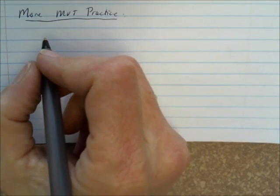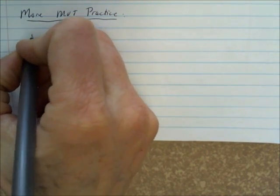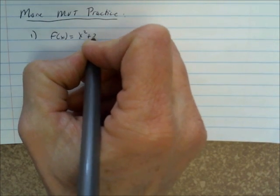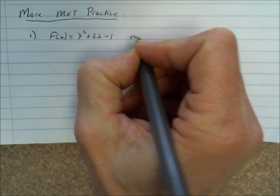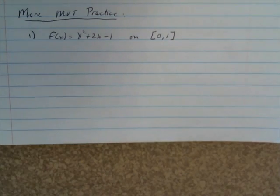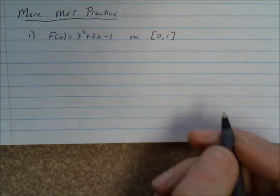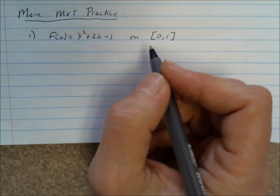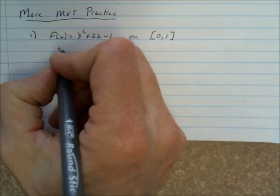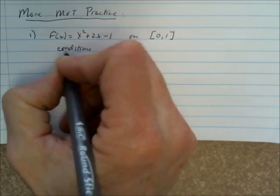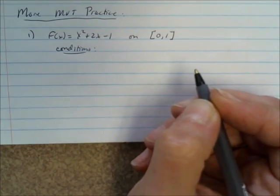So the first one is f(x) equals x squared plus 2x minus 1 on the interval between 0 and 1. Remember, with the Mean Value Theorem, it has to satisfy a few conditions before you get started on it. So let's list the conditions or the steps you need to go through.